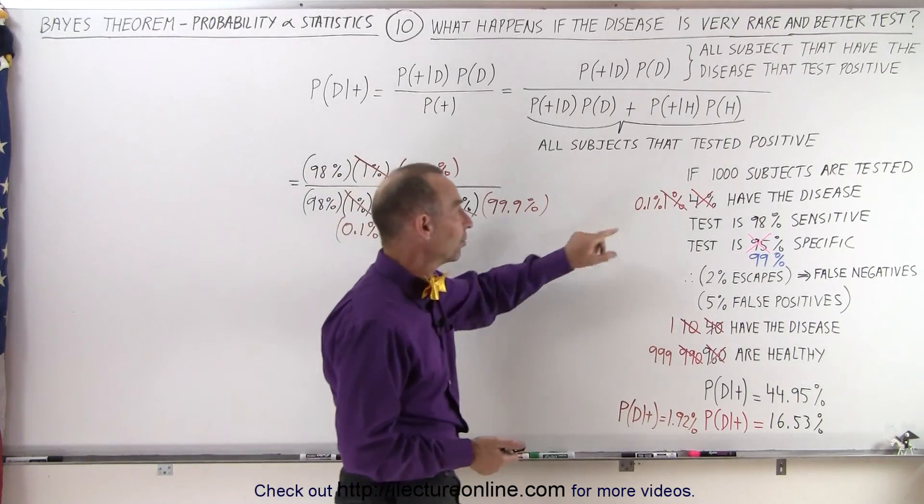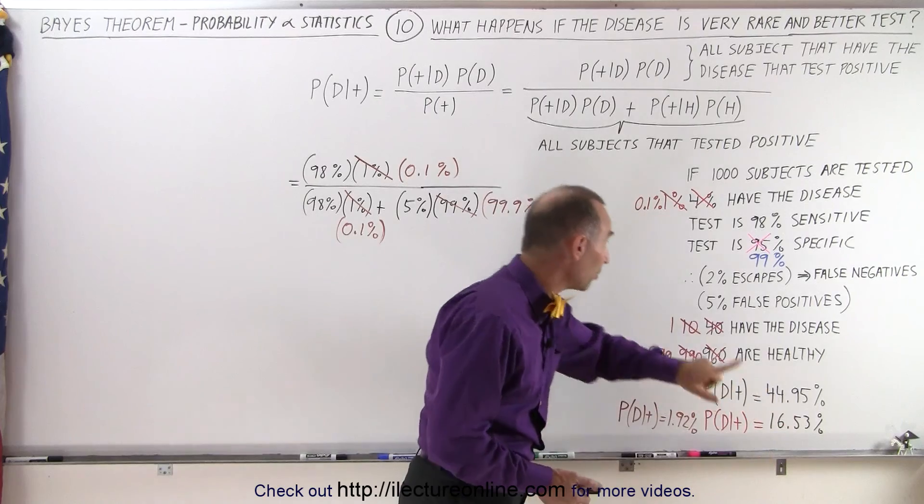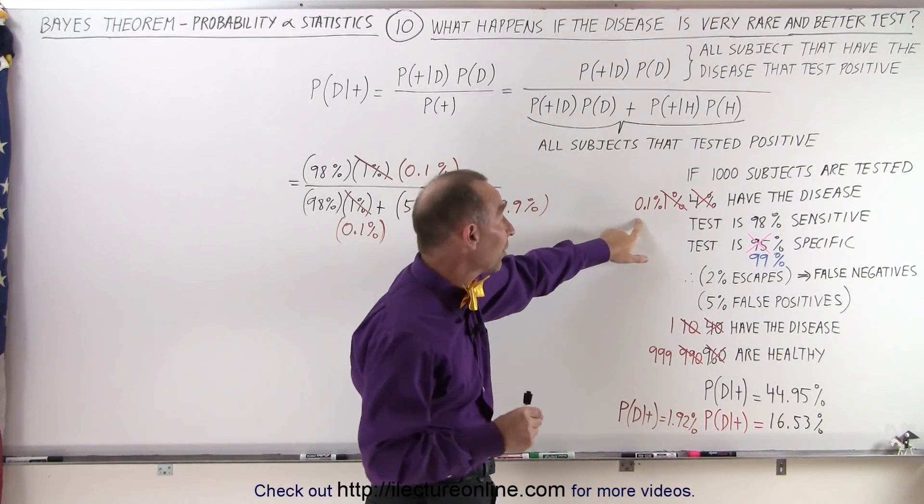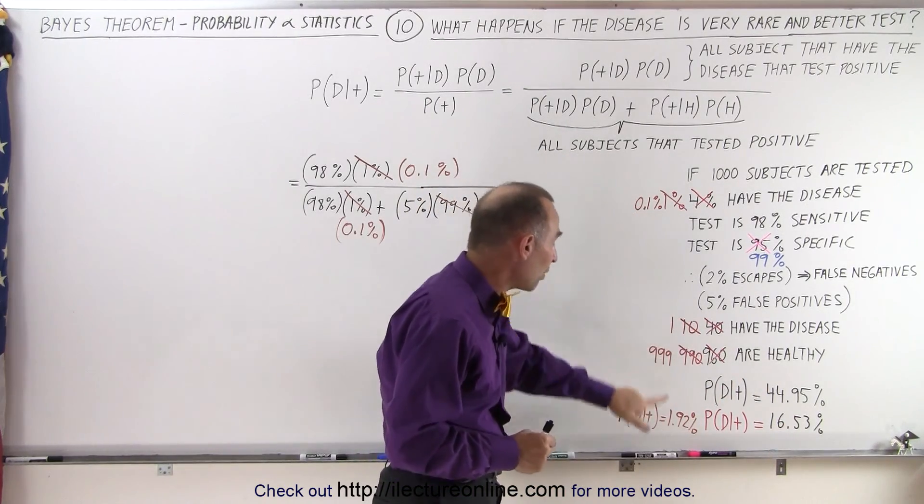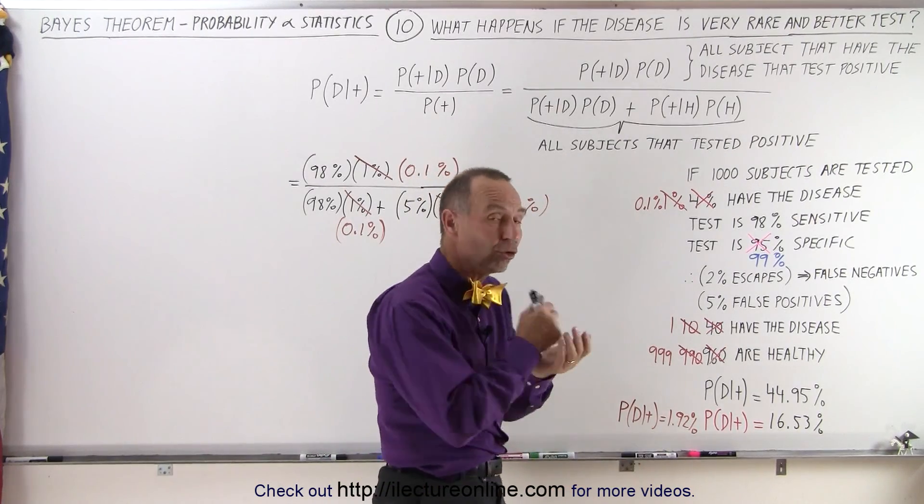Well that was the case, well actually it wasn't one in a thousand, in one in a thousand it was 16.53 percent, in one in ten thousand, 0.1 percent, it dropped to 1.92 percent. That's when it became a really small number.